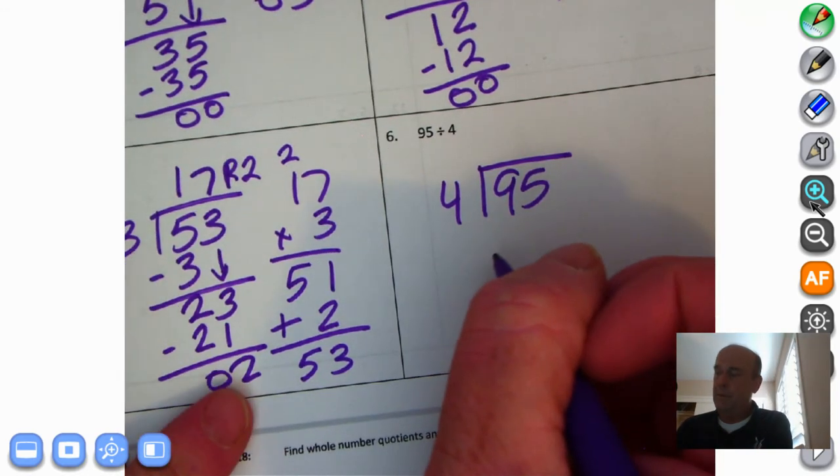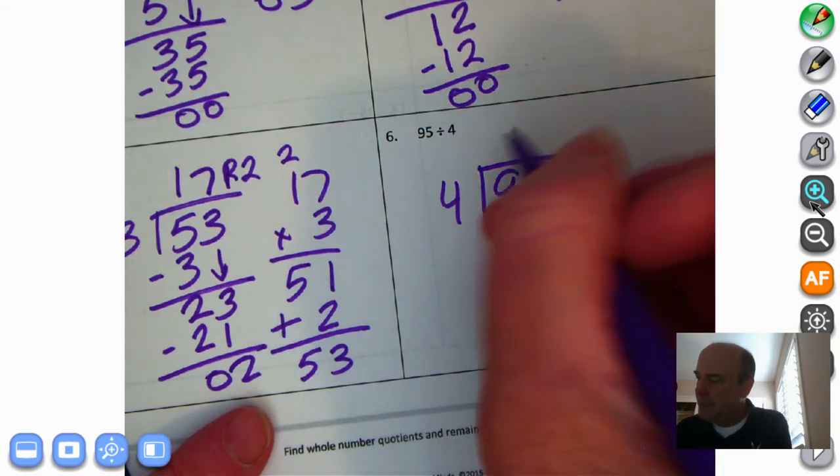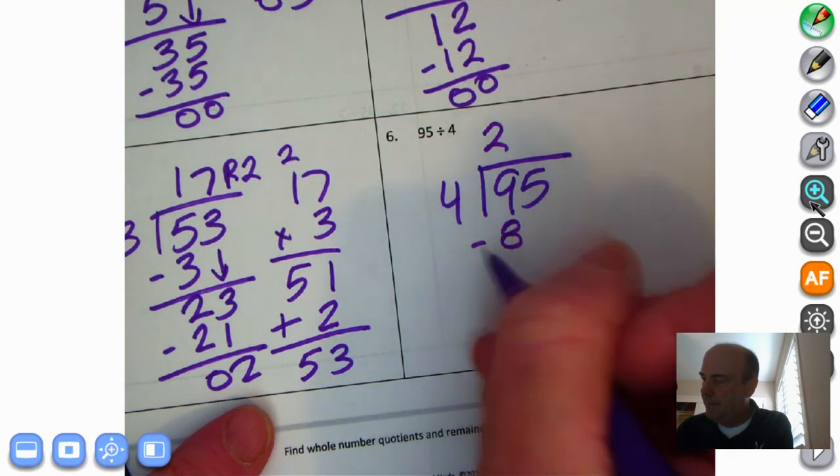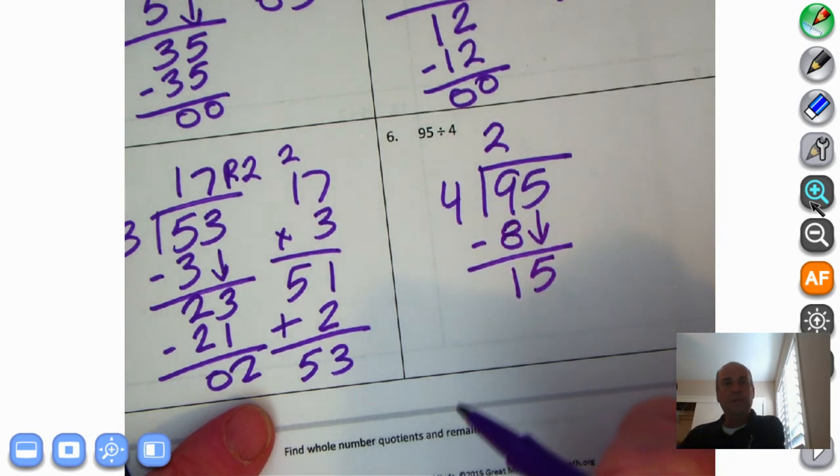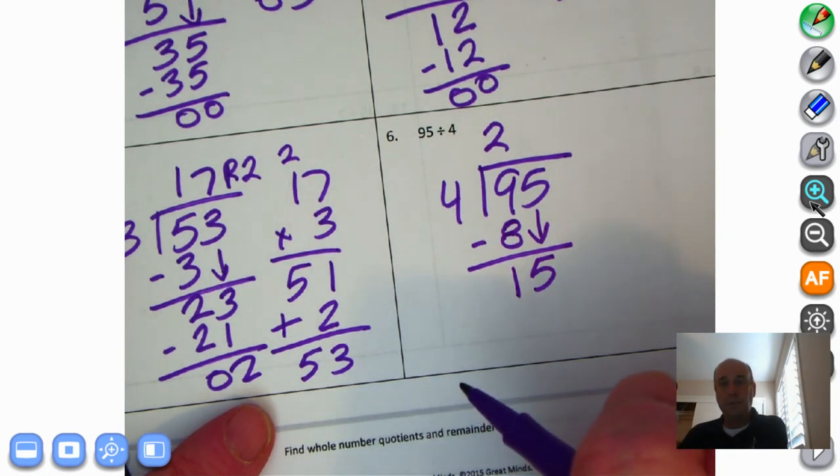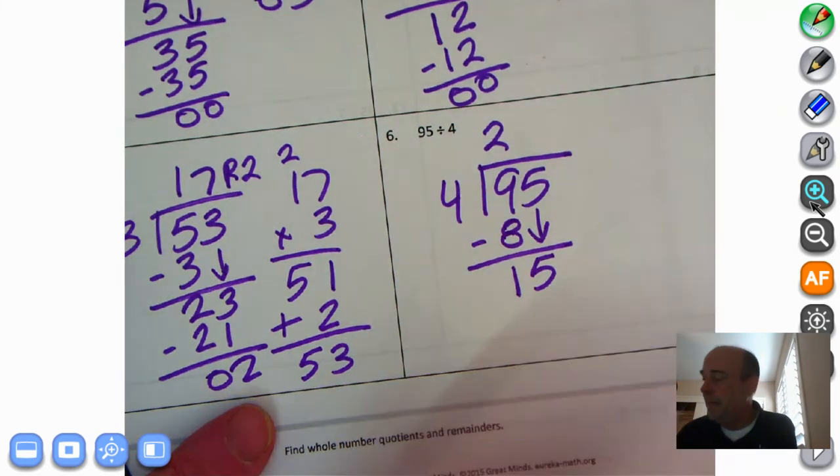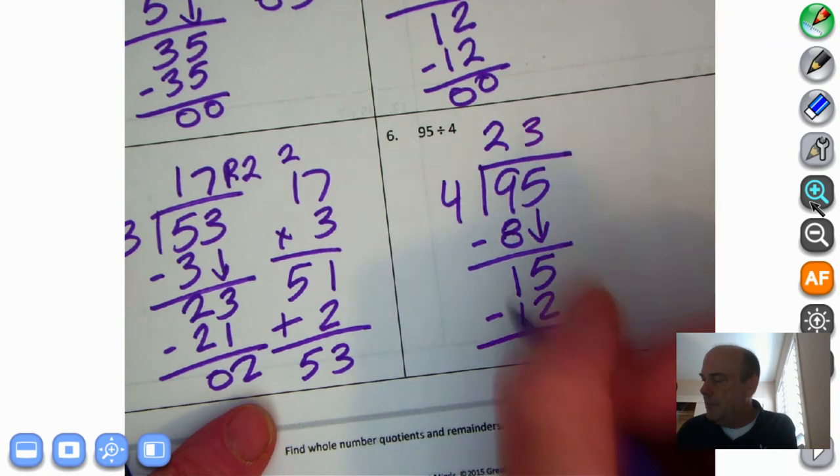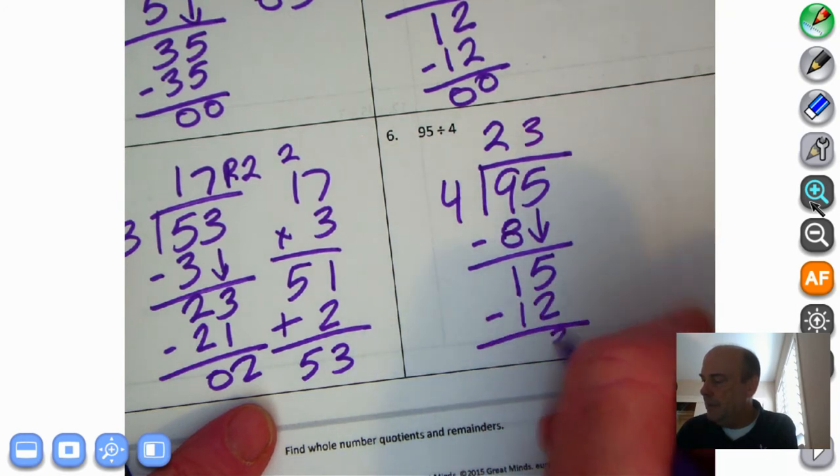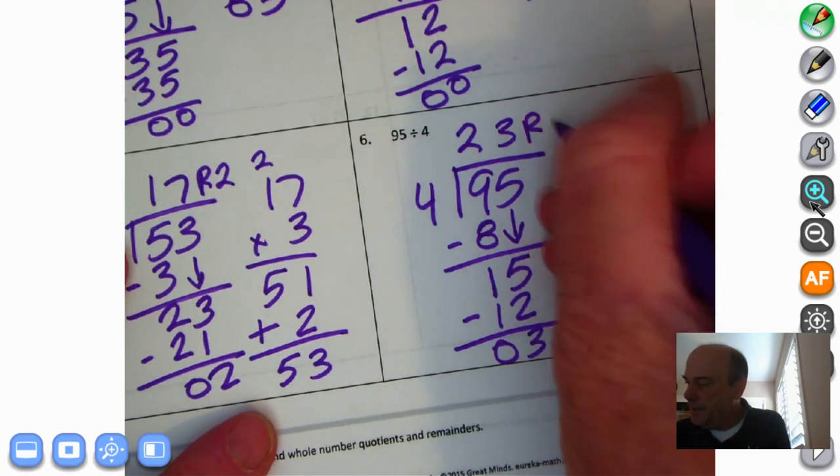4 times 1 is 4, but 4 times 2 is 8. 4 times 3 is 12. So it's got to be 4 times 2. 9 minus 8 is 1. Bring down the 5. 4 times 3 is 12. 4 times 4 is 16. 16 is greater than 15. So I'm going to go back to 4 times 3, which is 12. And I'm ready to subtract. 5 minus 2 is 3. 1 minus 1 is 0. So it looks like I'm going to have 23, remainder 3.